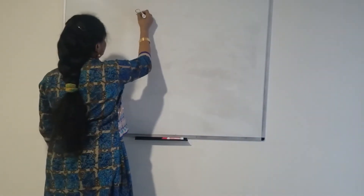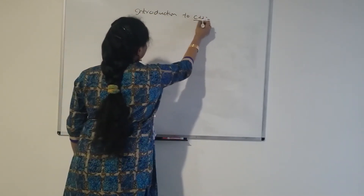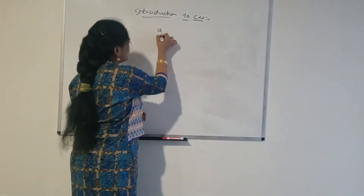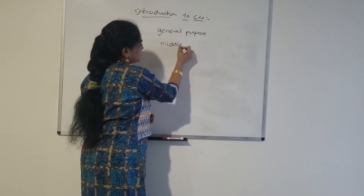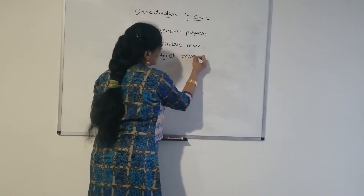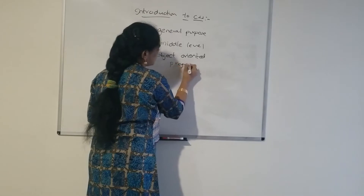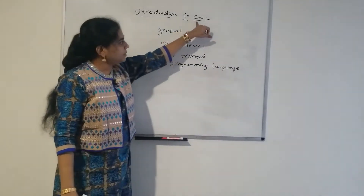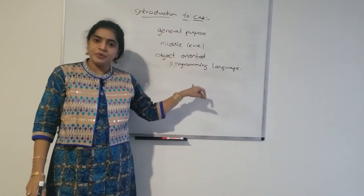First, coming to the introduction. C++ is a general purpose, middle level, object oriented programming language. How do you define C++? C++ is a general purpose, middle level, object oriented programming language.